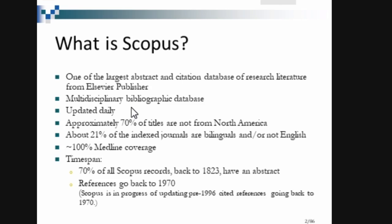Scopus is a multidisciplinary bibliographic database — it covers various disciplines. You should remember one important thing: these databases, Web of Science or Scopus, they don't contain full text. They only contain bibliographical data, which is why they are called bibliographic databases. They don't contain full text.